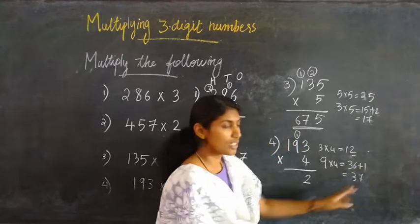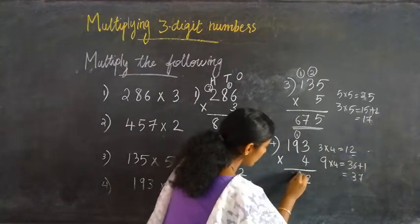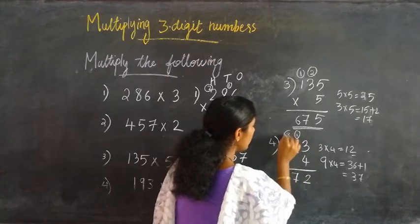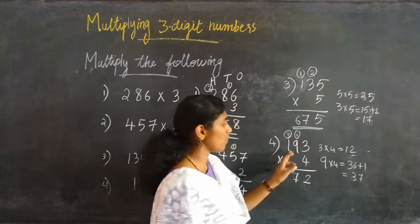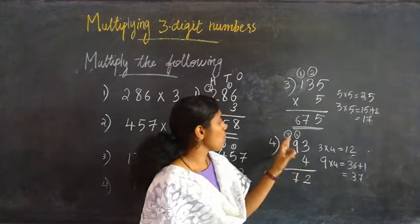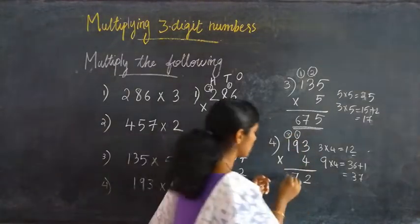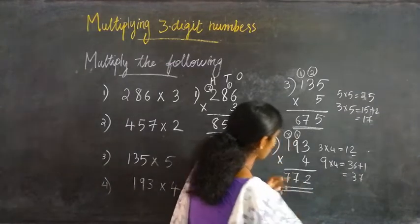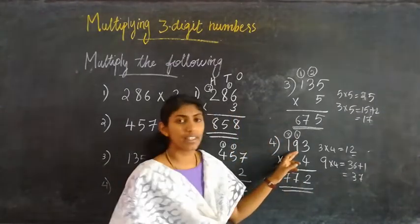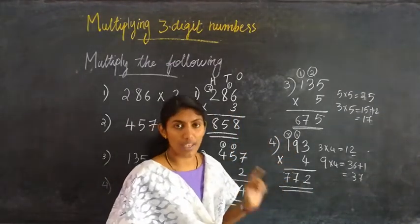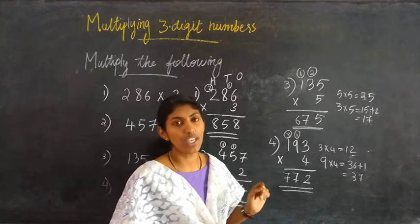Writing 7 here and 3 is carried over. Then 1 into 4 is 4, plus 3 is 7. So 193 into 4 equals 772.